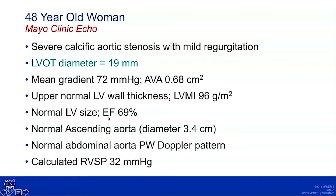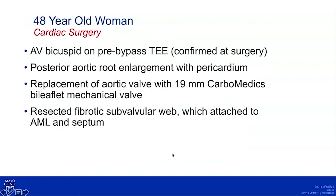She still had preserved ejection fraction. We obtained a normal ascending aorta diameter, no signs of coarctation in the abdominal aorta, and no pulmonary hypertension. At surgery she was in fact found to have a bicuspid valve, confirmed on pre-bypass TEE imaging and on surgical and pathologic inspection.